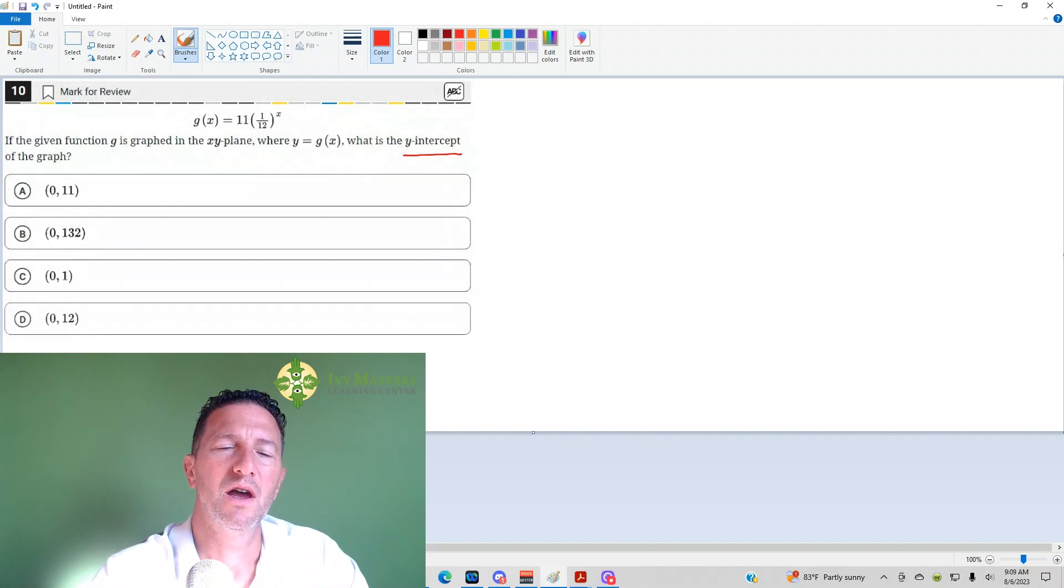Number 1, on the y-intercept, x is 0. Number 2, what anything to the 0 power is.